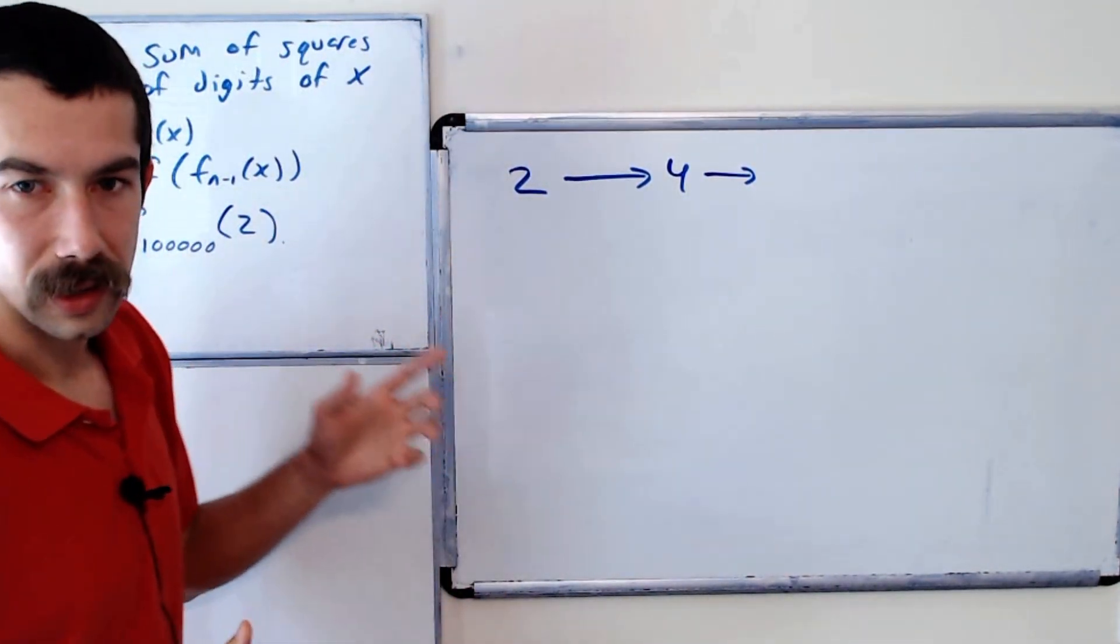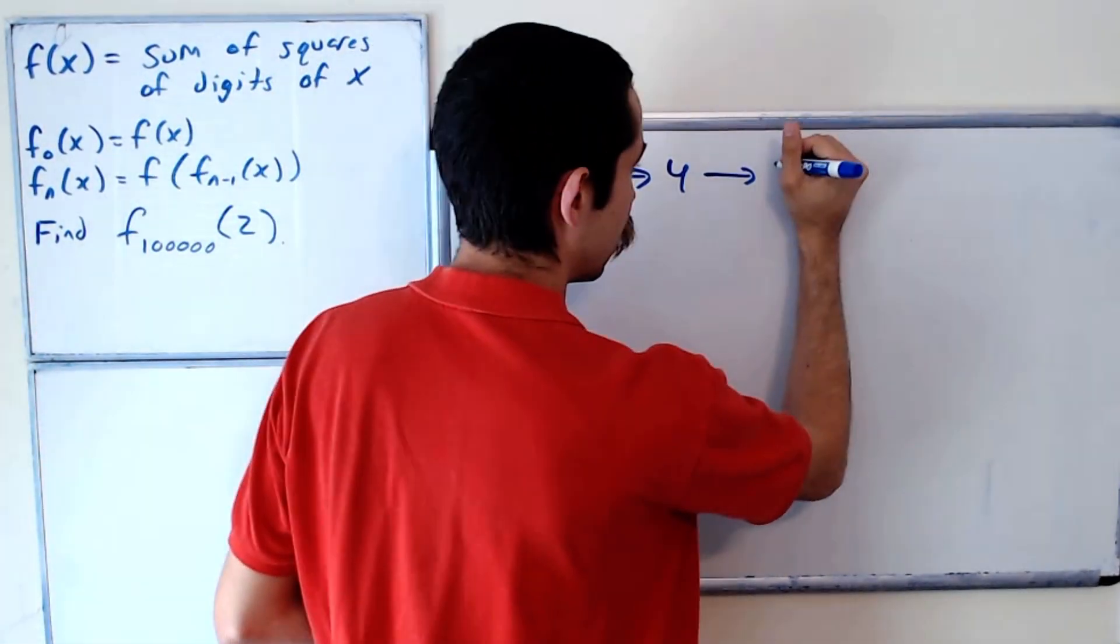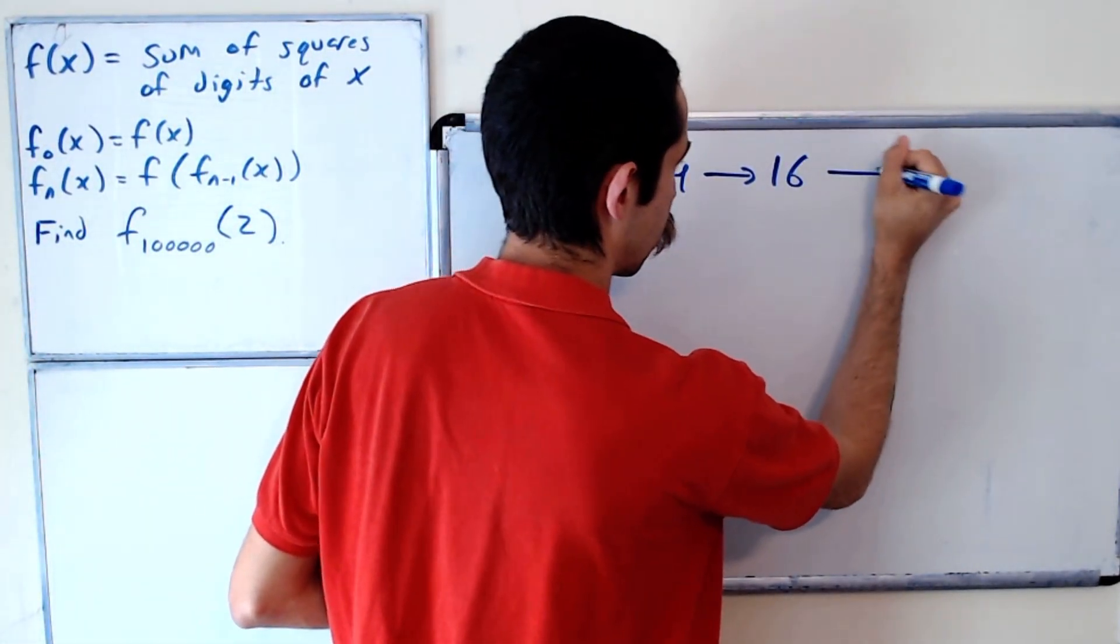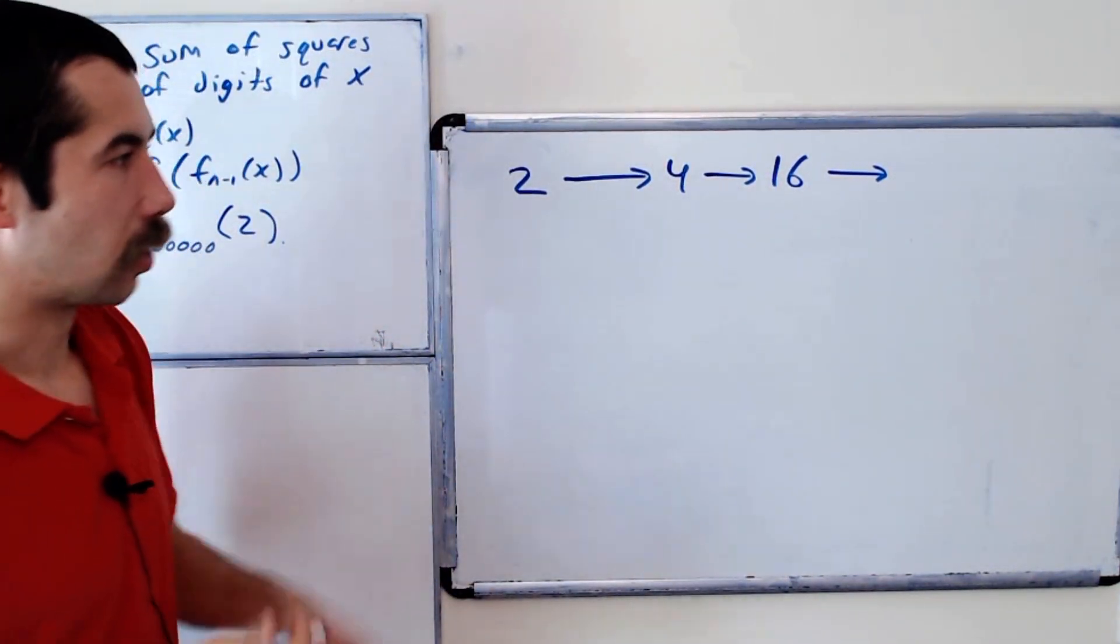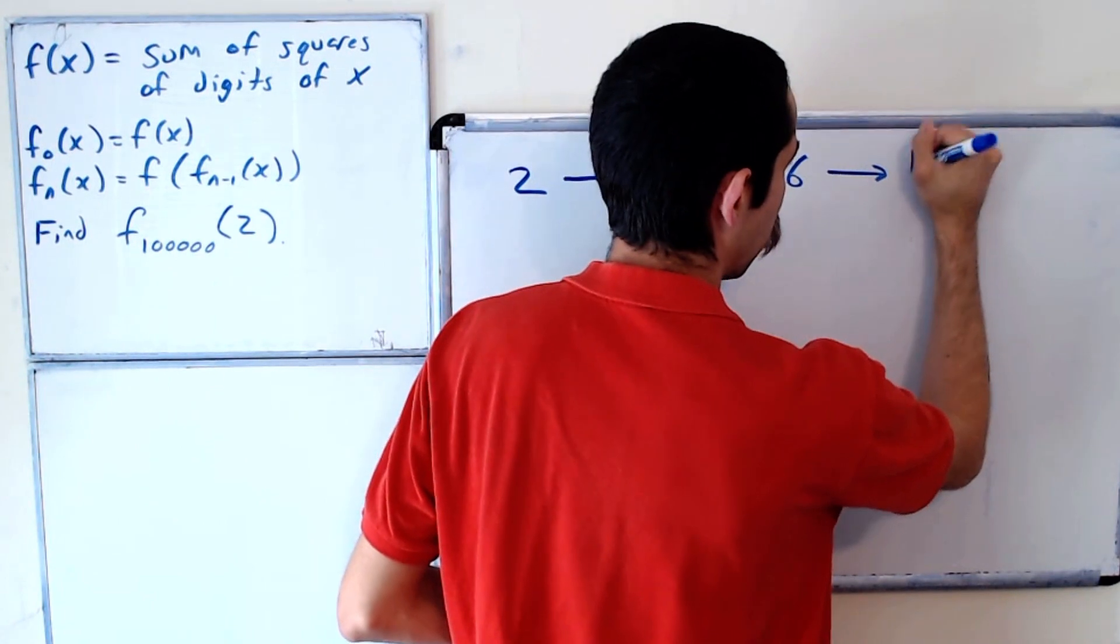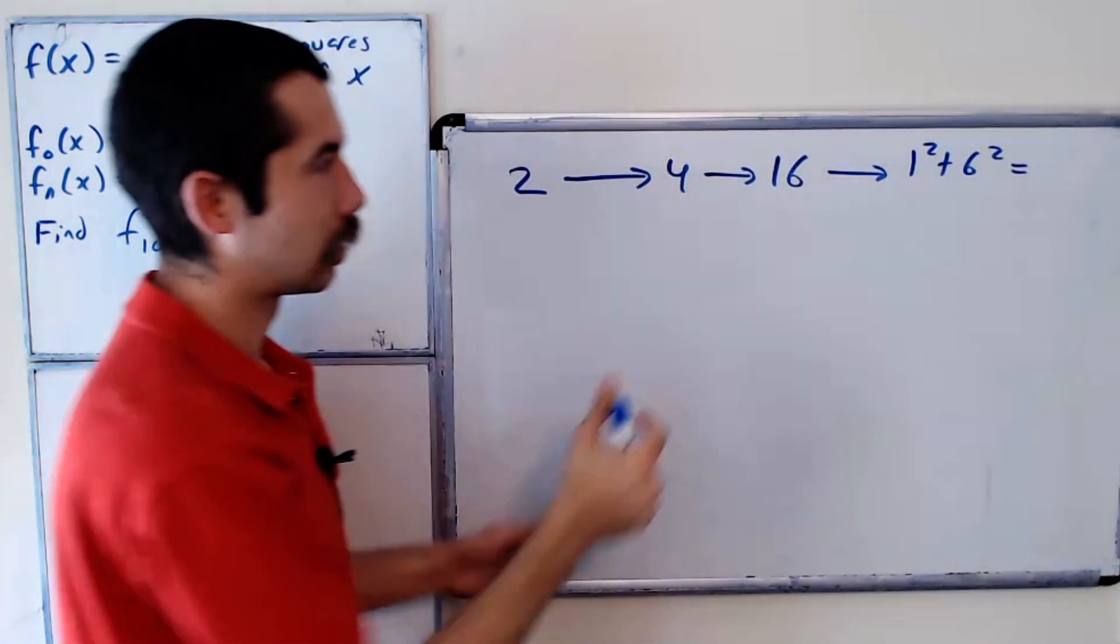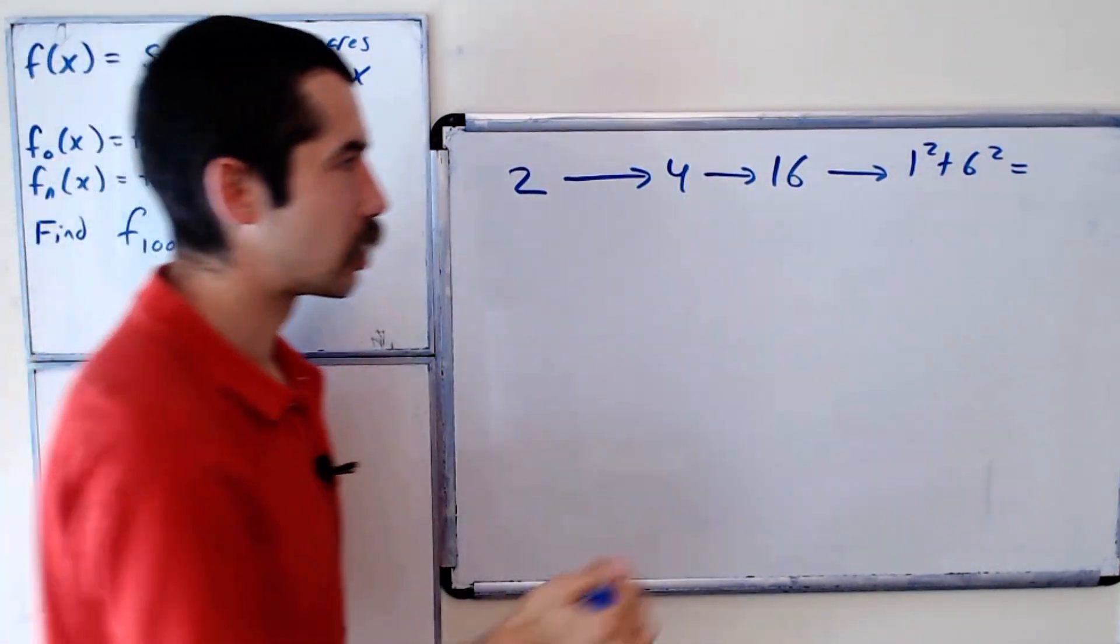Again, the sum of the squares of the digits, so 4 squared is 16. Okay, now it's the first interesting case. This is going to be mapped to 1 squared plus 6 squared. So you see this is how the function works. You square the digits and add them together, so we get 37.